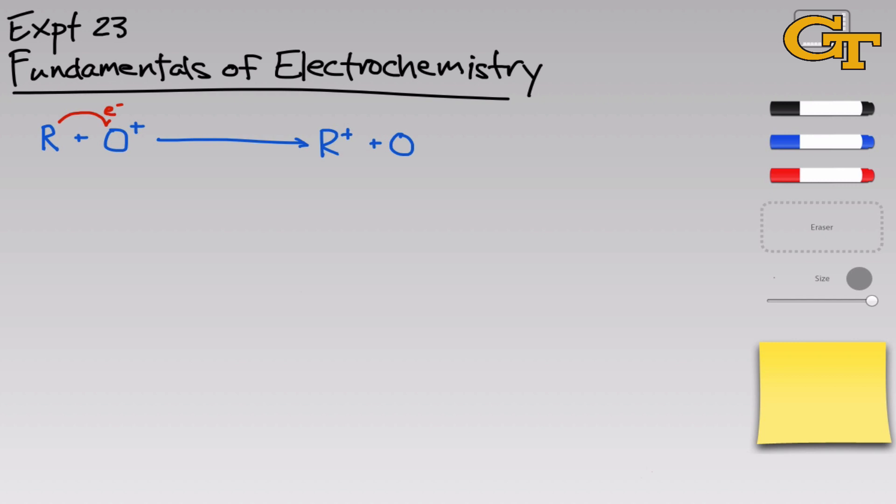Kind of along the same way that an acid-base reaction involves the transfer of a proton, redox reactions involve the transfer of one or more electrons. And the effect overall is a transfer of negative charge. We can think of two different things going on here. R is losing an electron, it's giving up an electron. And O+ is receiving or gaining an electron.